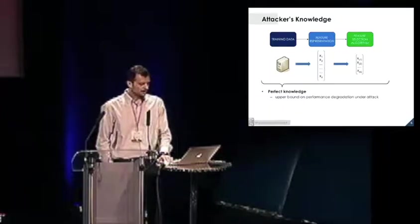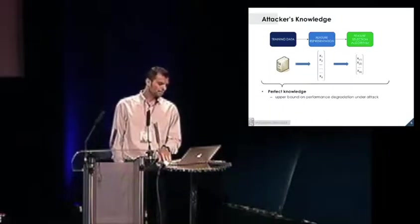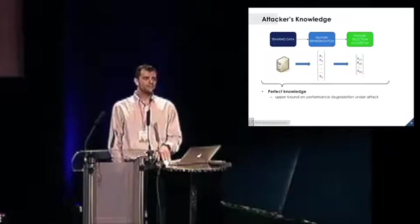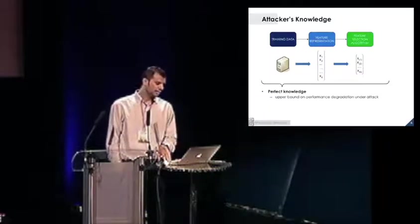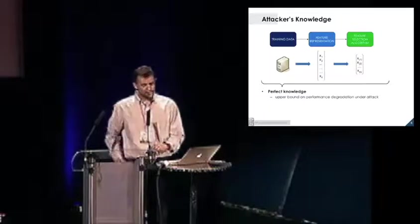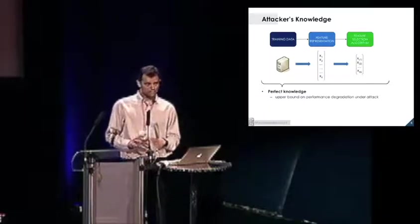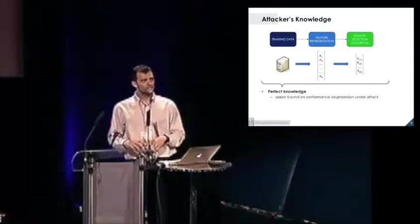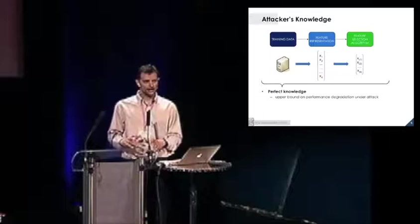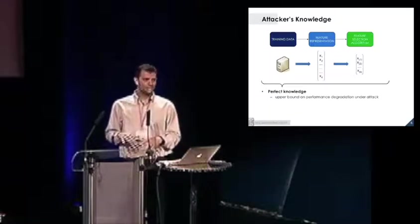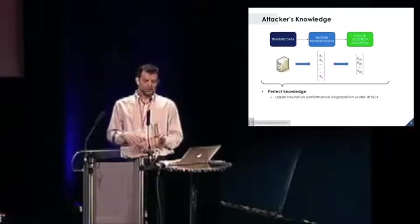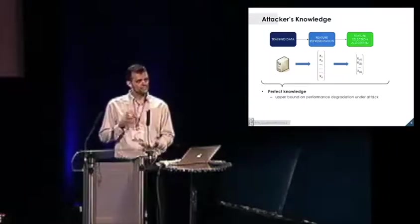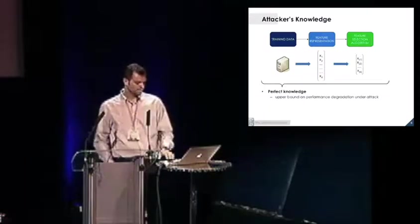In a more realistic setting, the attacker may know the feature representation and the feature selection algorithm, but only have limited knowledge of the training data. That means it doesn't exactly know the training data used to learn the system, but it can sample data from the same distribution. It can collect what we call surrogate data and then learn a system copy using this data. It can run its attack strategy over this data and then send these samples, the attack, to the targeted system, to the real one.